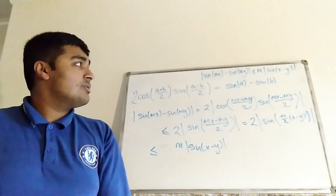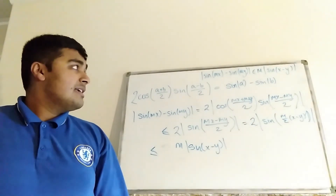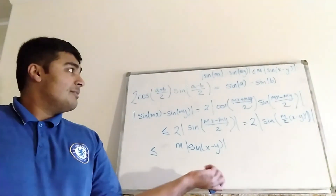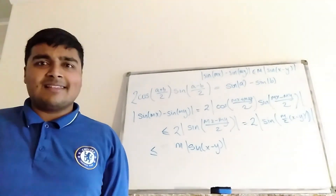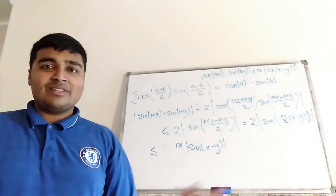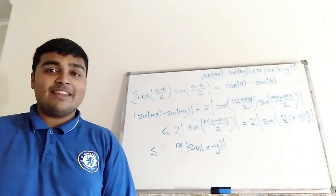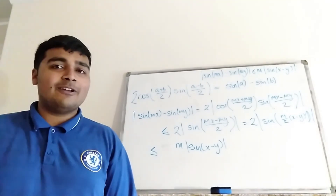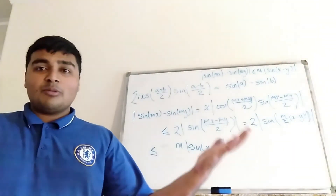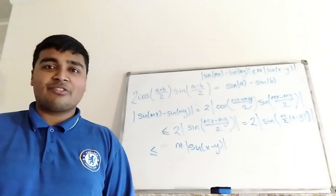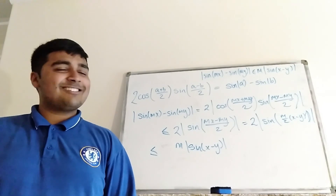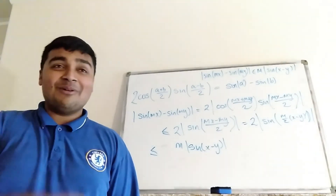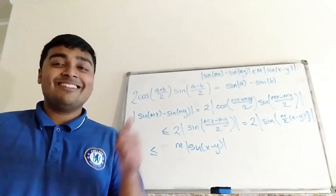So this inequality holds for all real x and y if and only if m is an even natural number. I hope you have enjoyed this solution video. If you are new here, please do consider subscribing — I make lots of fun maths videos: proofs, problem solving, that sort of thing. So if that excites you, please do consider subscribing. I will catch you in the next one. Have a great day.